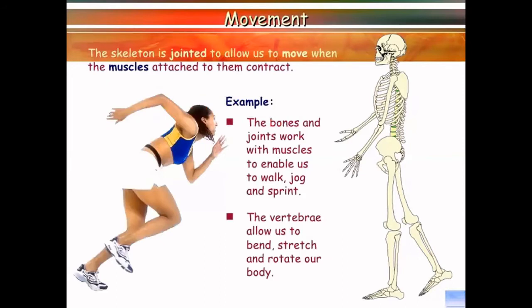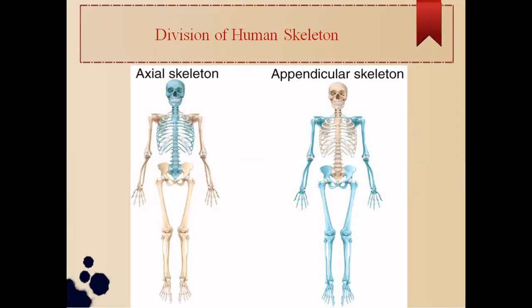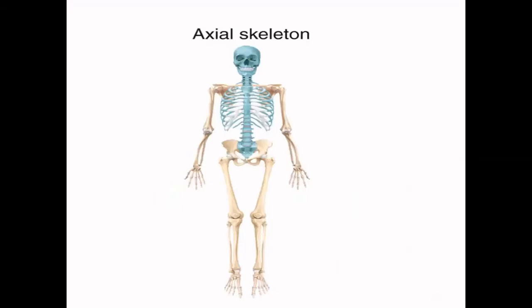Bones, along with joints and muscles, help in movement and locomotion. Now let's learn the division of the human skeleton. The human skeleton is divided into two parts: axial skeleton and appendicular skeleton.